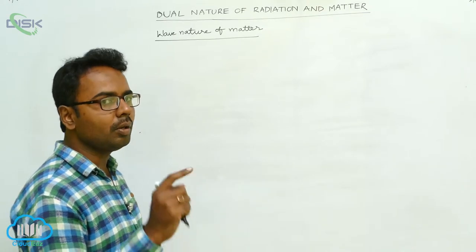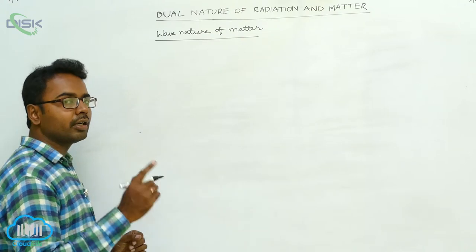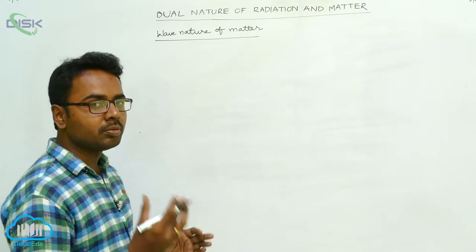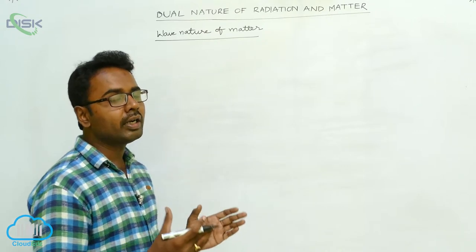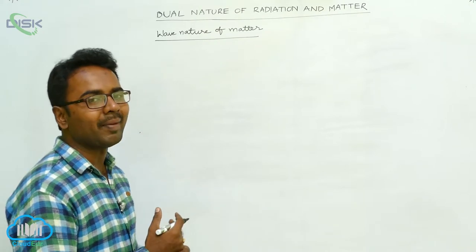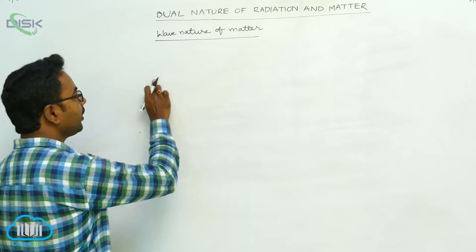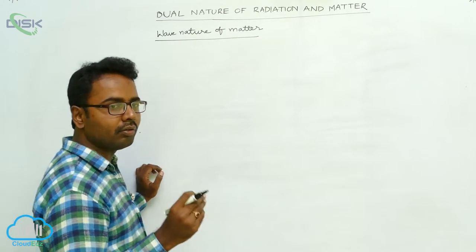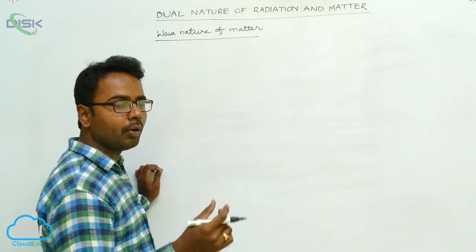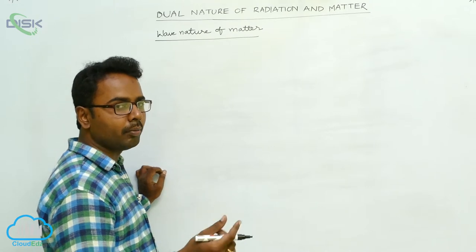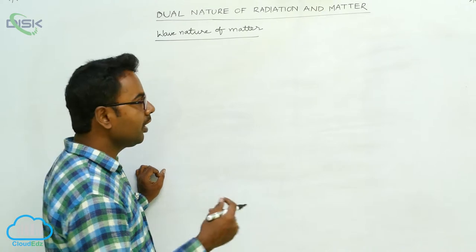Light is exhibiting both wave and particle nature. The scientist De Broglie got a doubt: if wave and particle nature is possible for radiation, then why could it not be possible for matter also? He studied this and concluded that the particles of matter also have wave nature — whenever particles of matter are propagating, they exhibit wave nature.